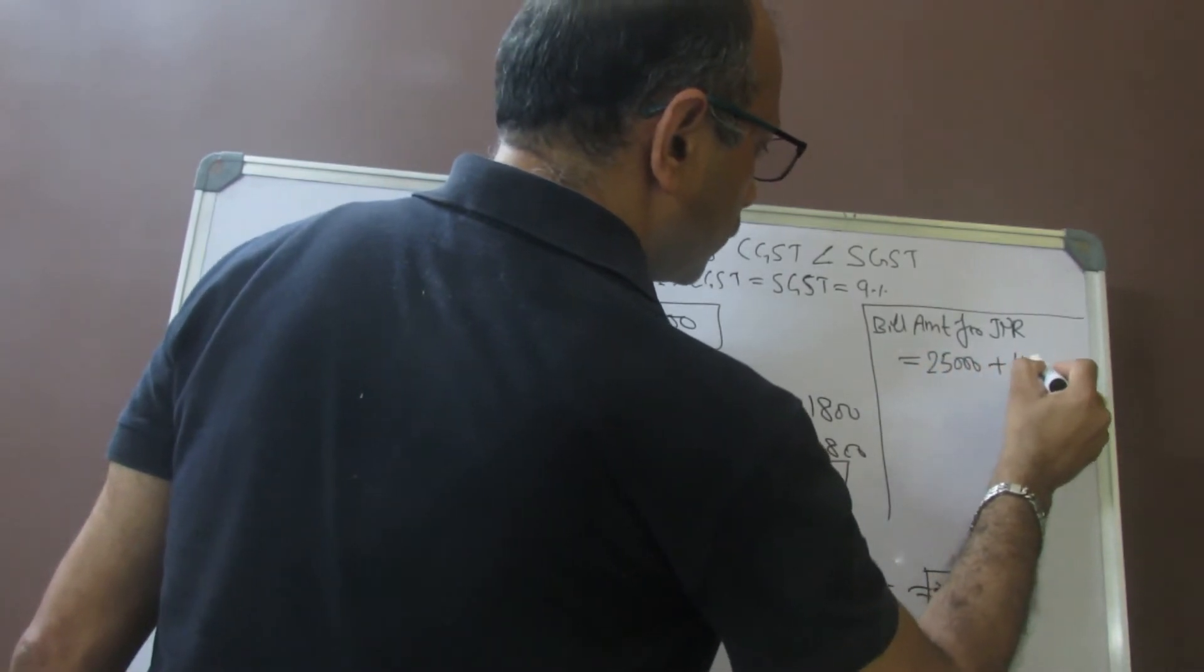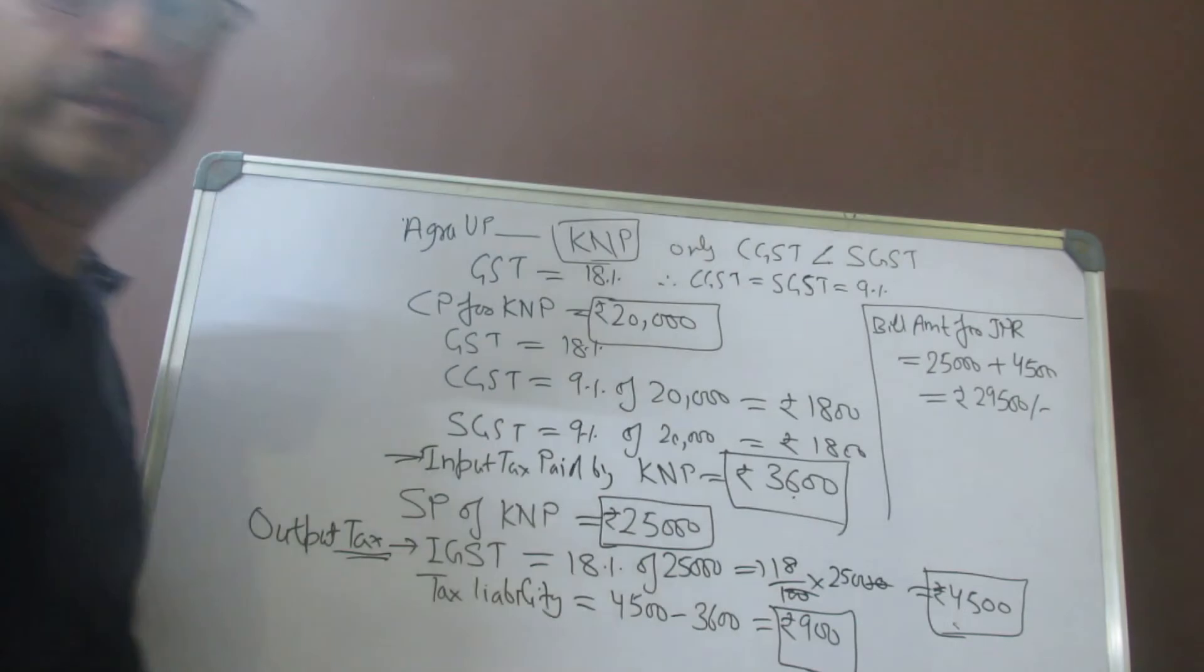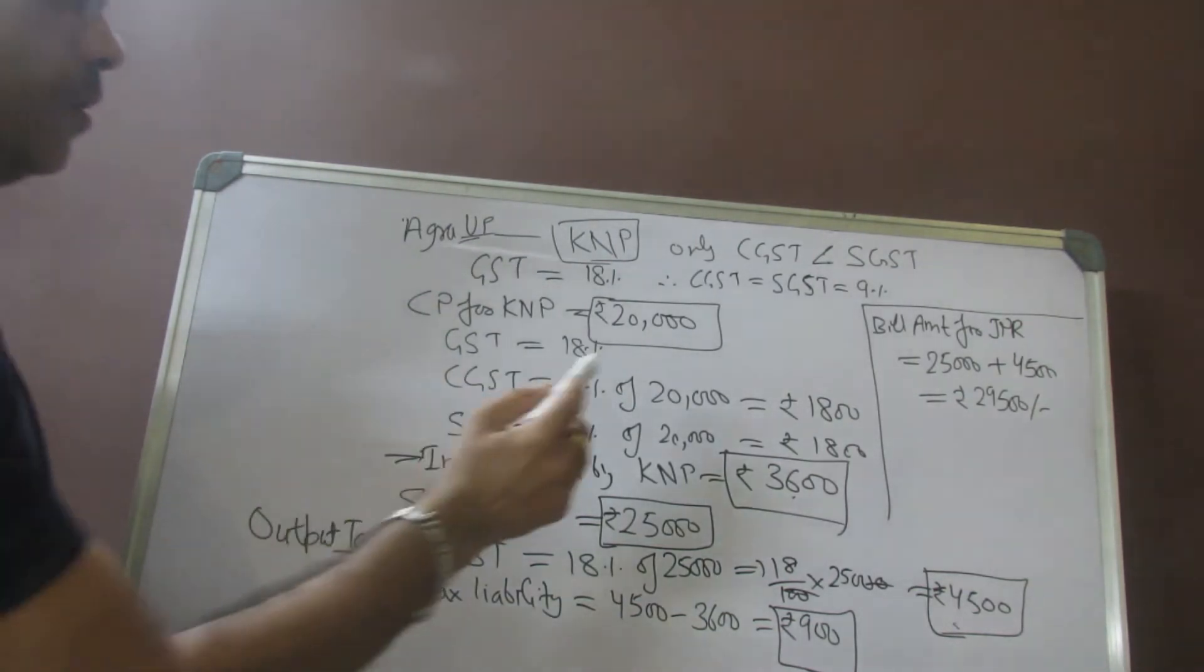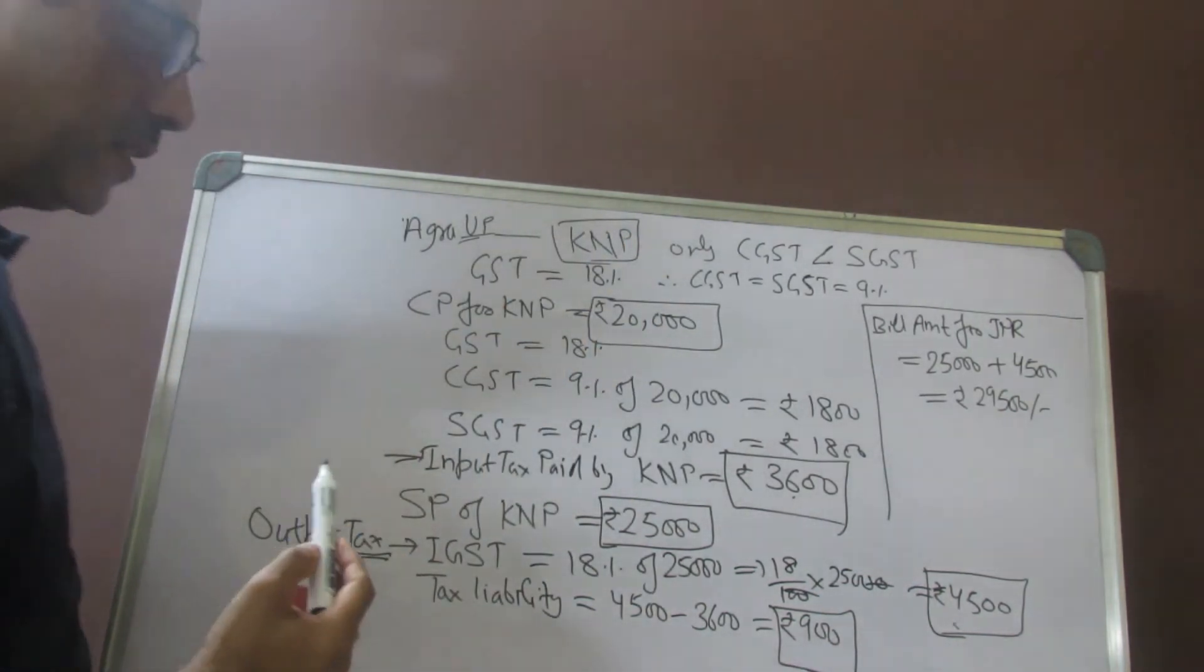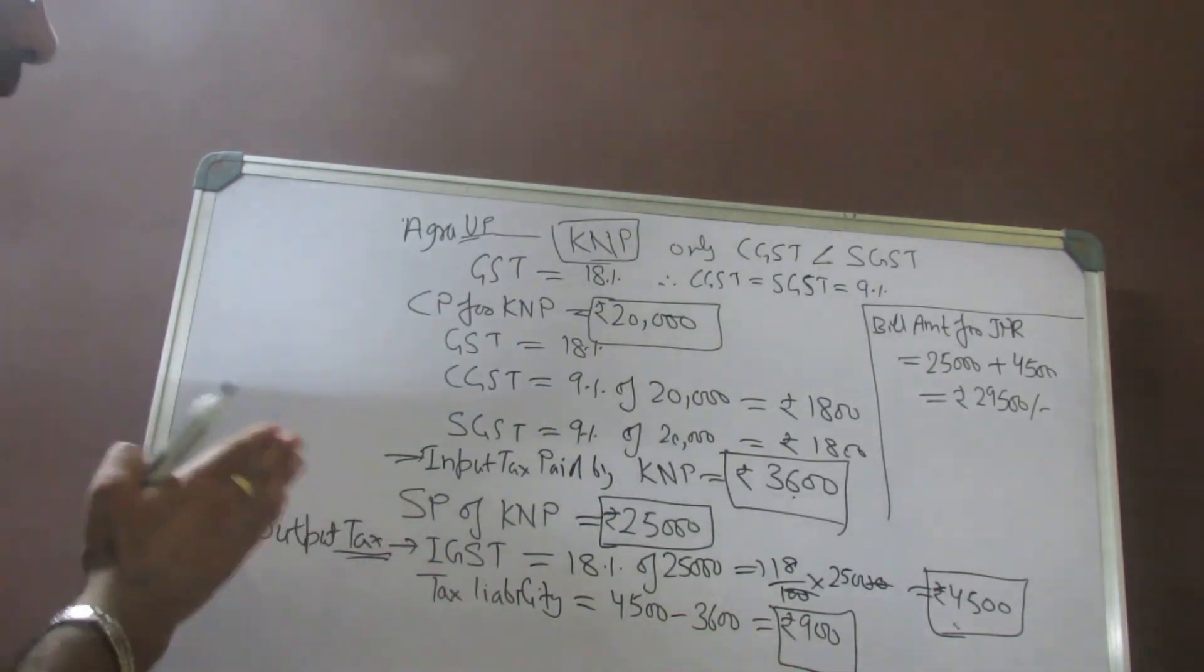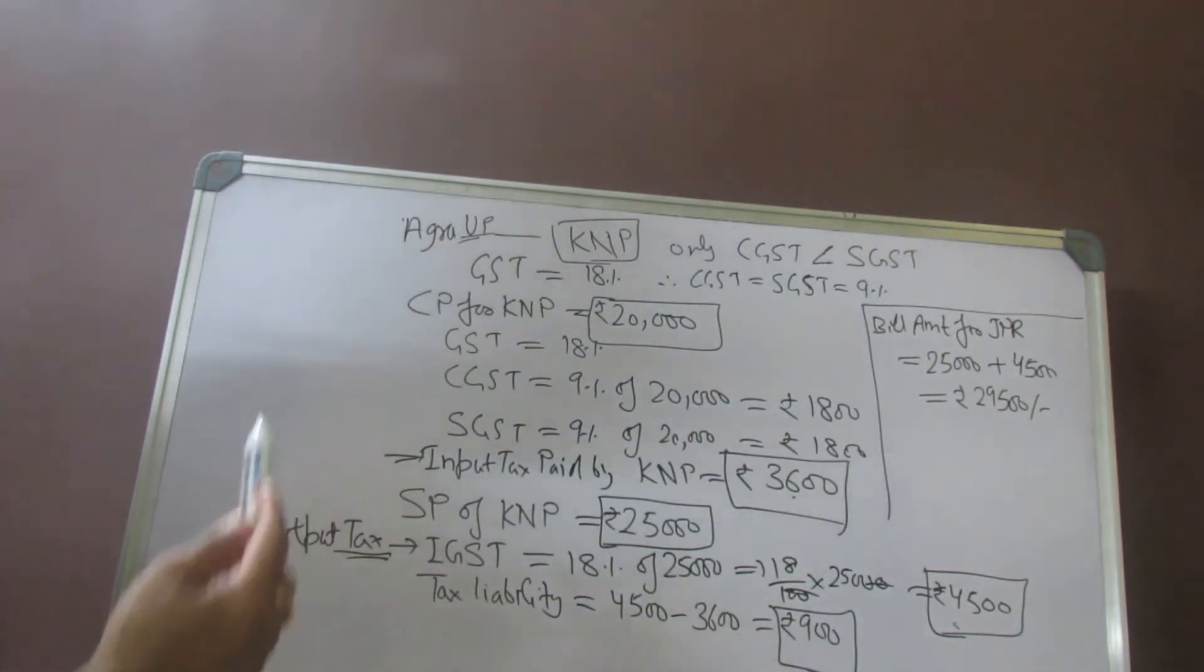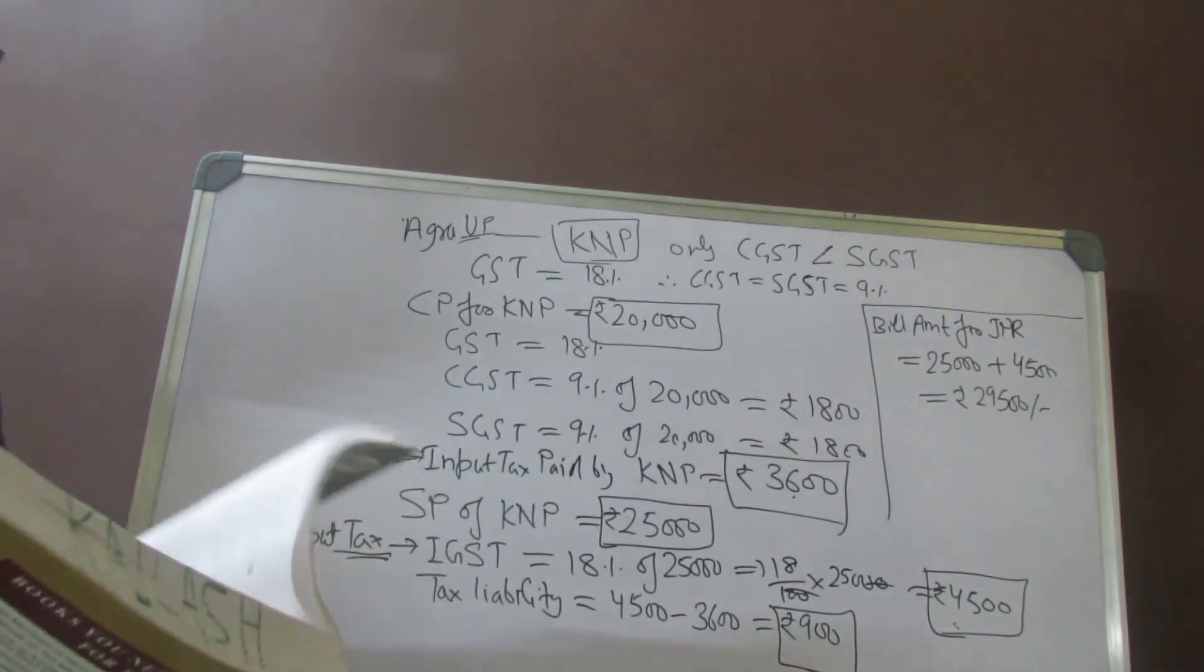I hope this is clear. In this we have seen intrastate from Agra to Kanpur, wherein only CGST and SGST was paid, and then from Kanpur to Jaipur, which is Rajasthan, which is interstate, and only IGST component was paid. Please understand, for the purpose of GST, we look at the input tax in whatever form and output tax, and final tax liability is output tax minus input tax. This is how we solve these questions.